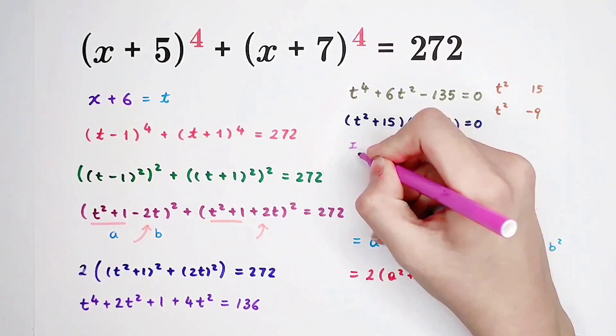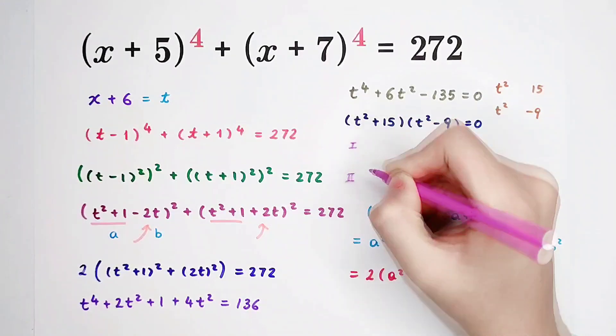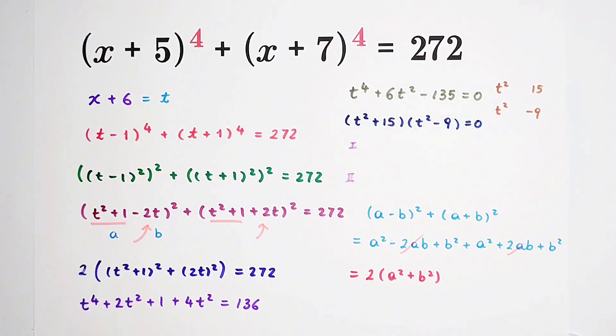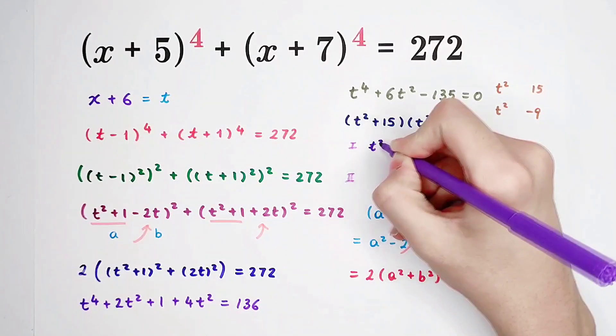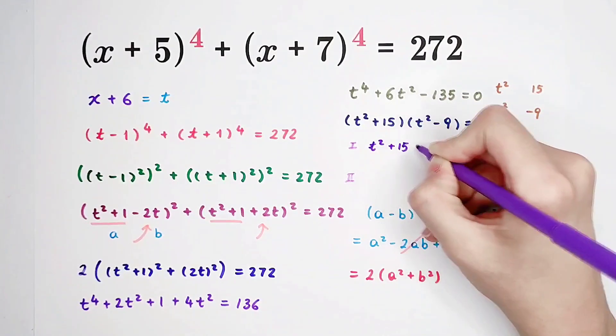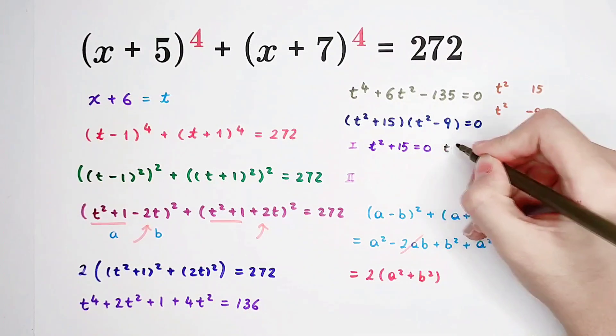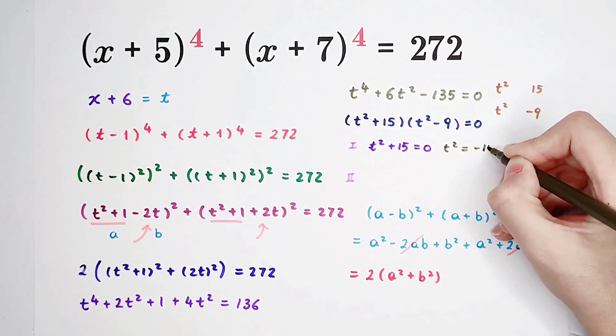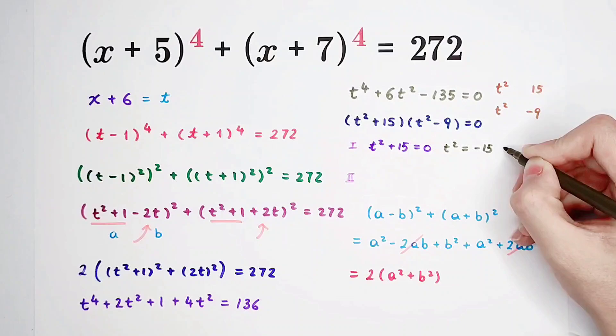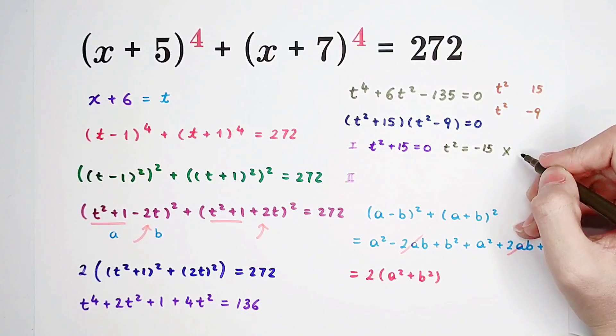So there are two cases, the first case and the second case. In our first case, t squared plus 15 equals 0. So no real solutions, however, complicated solutions or imaginative solutions, there are.